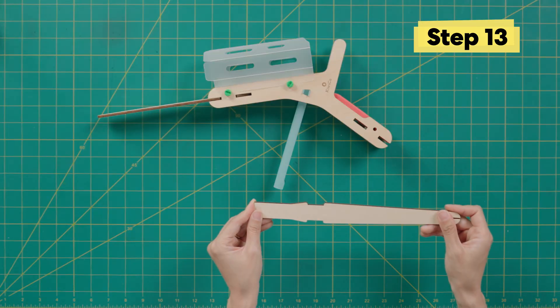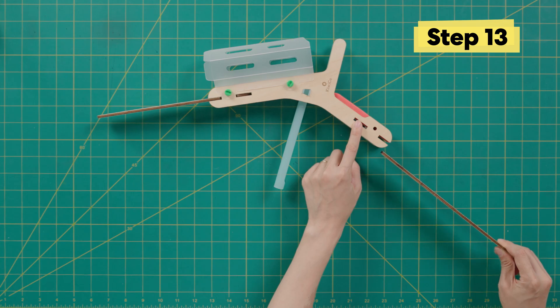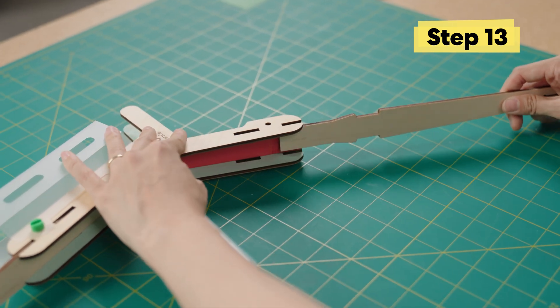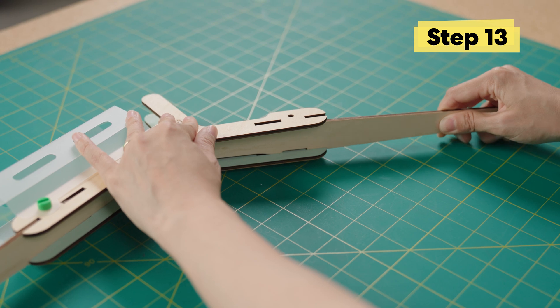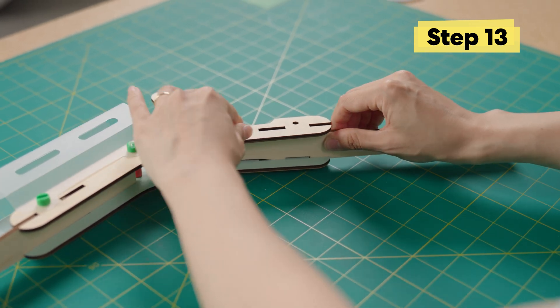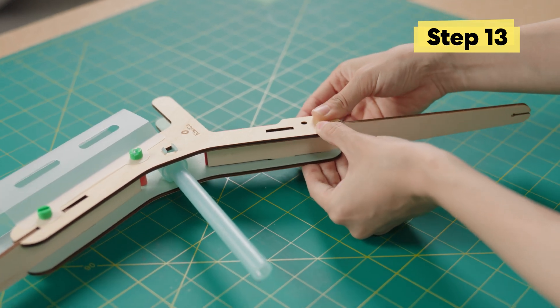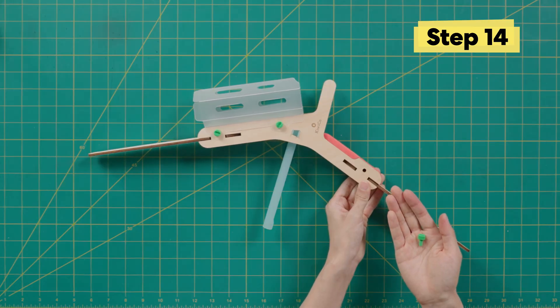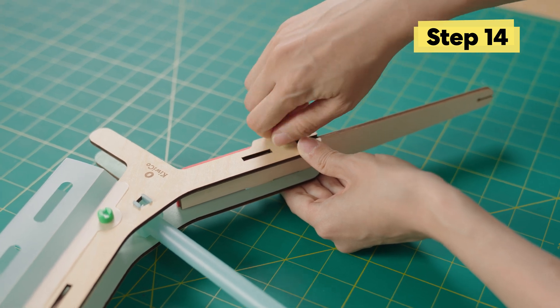Take the second limb and do the same thing on this side. Make sure these tabs are aligned on this end, pointing this way. Slide it in and make sure the wood pieces align. Now holding this, take the last bolt and secure that last bow limb into place.